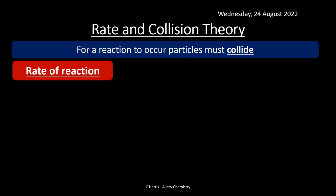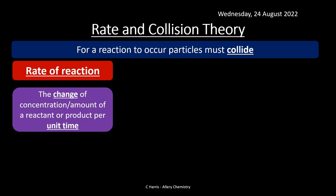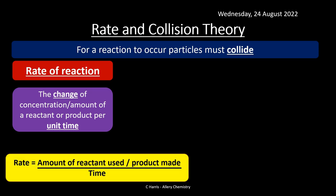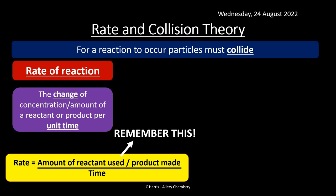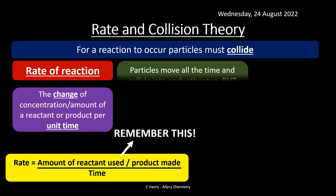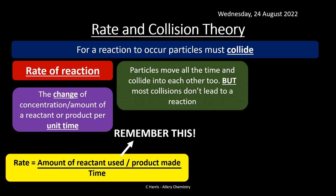For any reaction to occur, particles have got to collide with each other — they've got to hit each other for a reaction to happen. But there are other criteria too, because molecules can bump into each other without it necessarily leading to a chemical reaction. The rate of reaction is how fast something goes. The official definition is: the change of concentration or amount of a reactant or product per unit time. The equation is: rate = amount of reactant used (or product made) ÷ time.